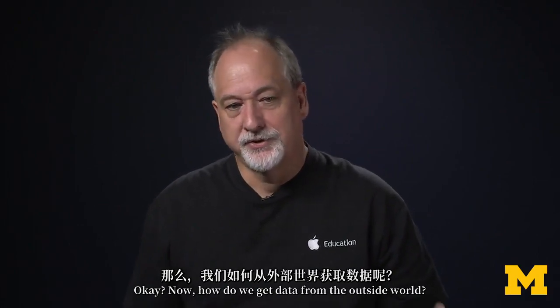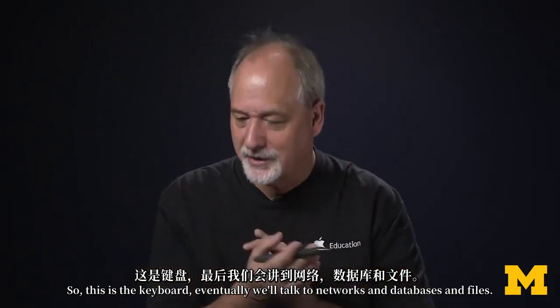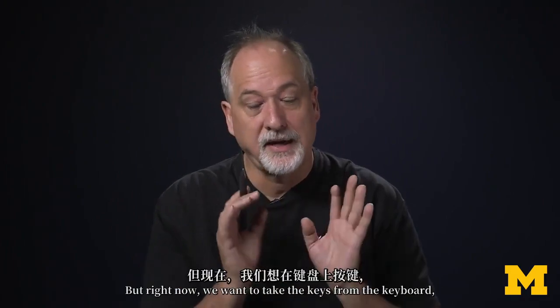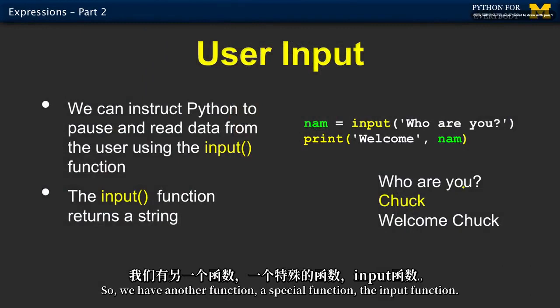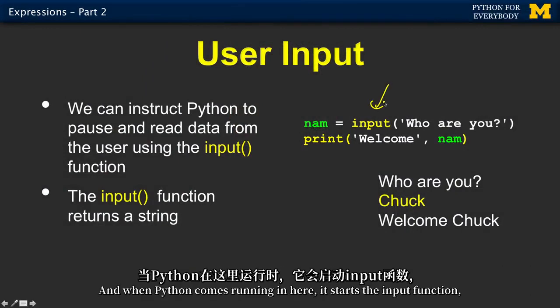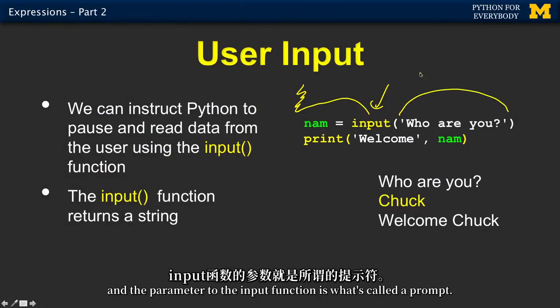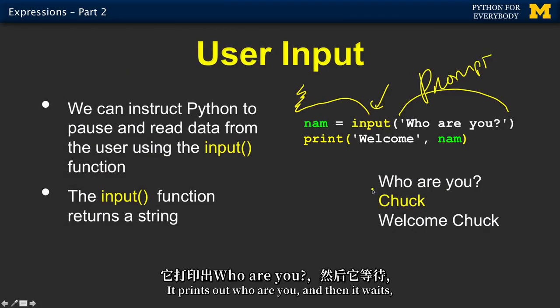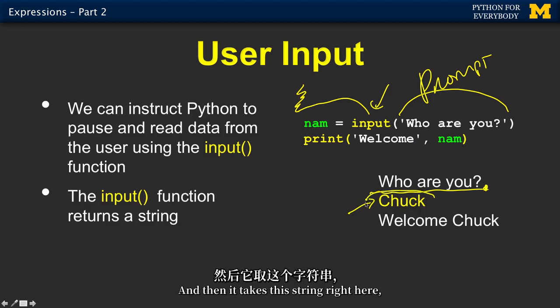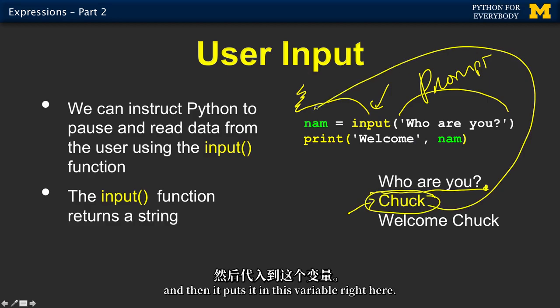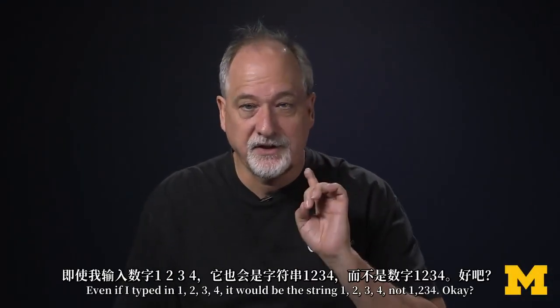Now, how do we get data from the outside world? So this is the keyboard. Eventually, we'll talk to networks and databases and files. But right now, we want to take the keys from the keyboard and get it into a variable. So we have another function, a special function, the input function. And when Python comes running in here, it starts the input function. And the parameter to the input function is what's called a prompt. It prints out, who are you? And then it waits. And then we type into the keyboard, Chuck. And then we hit the enter key. And then it takes this string right here. And then it puts it in this variable right here. It is a string. Even if I typed in one, two, three, four, it would be the string one, two, three, four, not 1,234.